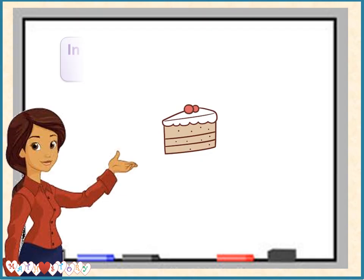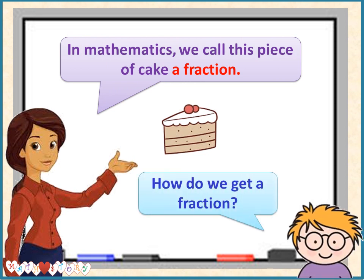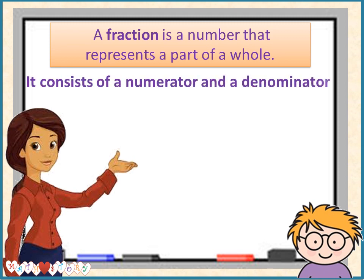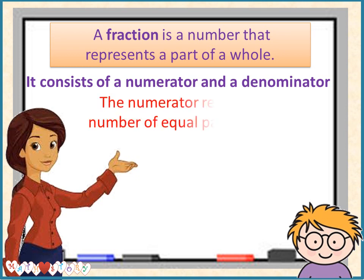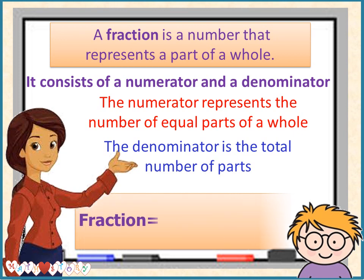In mathematics, we call this piece of cake a fraction. How do we get a fraction? A fraction is a number that represents a part of a whole. It consists of a numerator and a denominator. The numerator represents the number of equal parts of a whole. The denominator is the total number of parts.